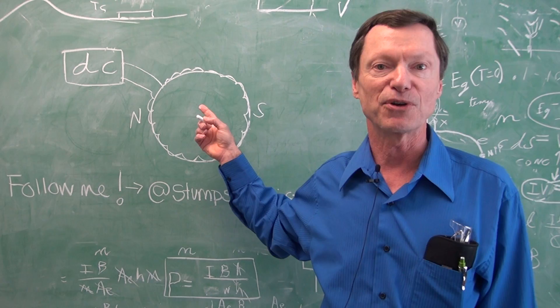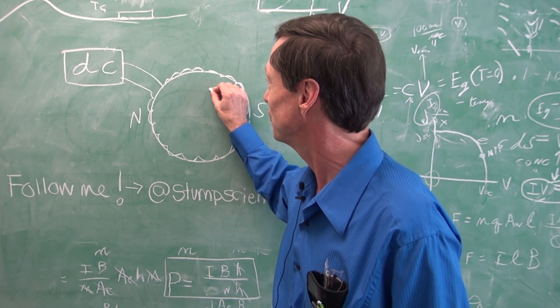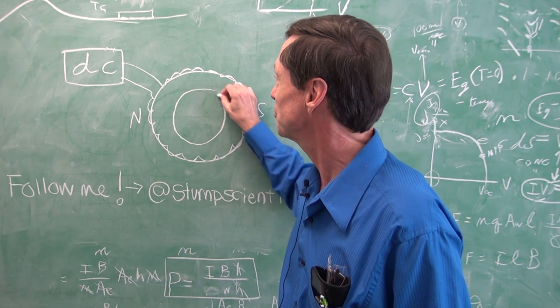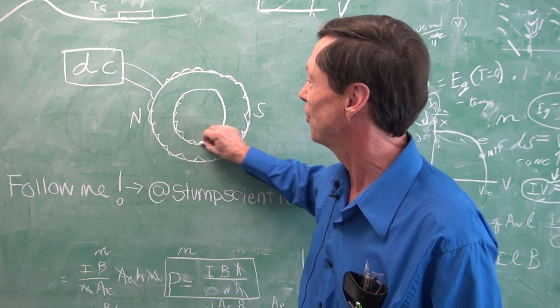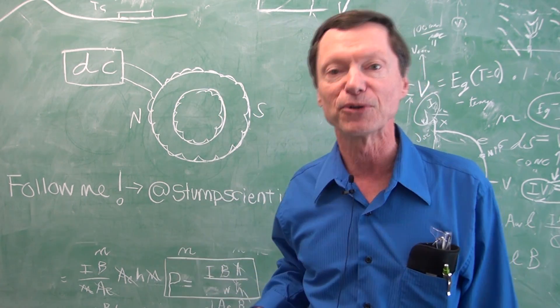Now we have to have a rotor that turns in the motor. So we'll draw the rotor. And it has a coil on it too. We call this coil the field coil.